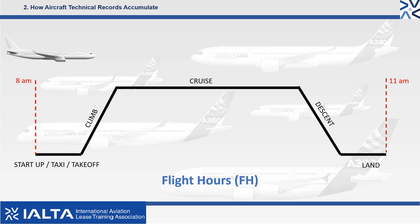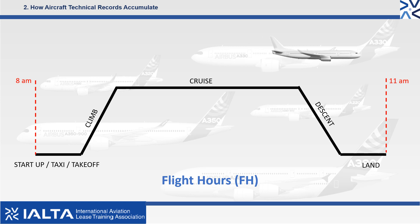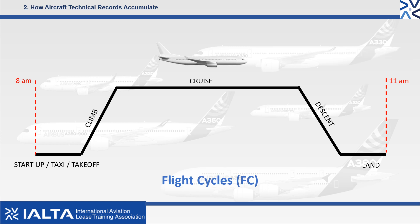Flight hours refers to the actual number of hours flown by an aircraft over a specified time period, from the moment the aircraft leaves the ground on takeoff until the moment the wheels touch the ground again on landing. In our illustration below, we can see the total flight hours equals 3FH. A flight cycle consists of a takeoff and a landing. In our illustration, the flight cycles equals 1FC.